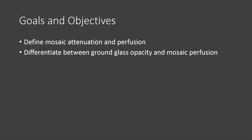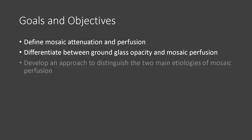We want to try to differentiate between ground glass opacity and mosaic perfusion on CT — how can we differentiate confidently between these two entities? We want to develop an approach to distinguish the two main etiologies of mosaic perfusion, apply an algorithm to CT to come down firmly on one of those two etiologies, and then learn the differential for each.